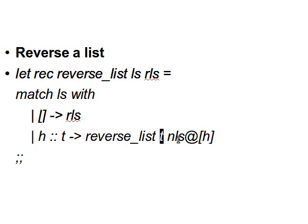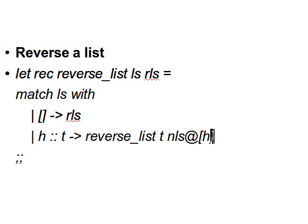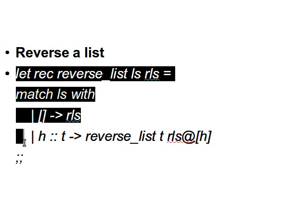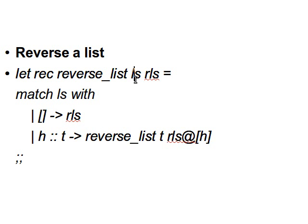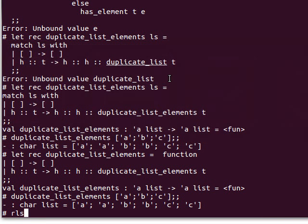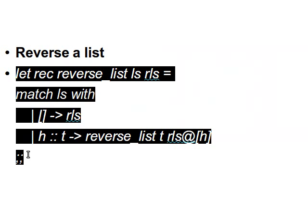The result should carry `rls` with `[h]` appended to it — by putting `h` inside square brackets we treat it as a single-element list, and then append it to the end of `rls`, the reverse list. Notice the way I call this function: I pass two parameters — the list I want to reverse, and then an empty list `[]` for `rls` — so we can start building the result by attaching elements to that list.